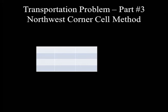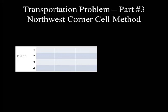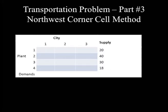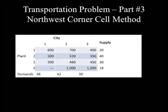The sources are labeled at the left margin as plant one, plant two, plant three, and the external network labeled as plant four. Supplies are written at the right margin of each row: 20, 40, 30, and 18 million kWh respectively. Destinations — city one, city two, and city three — are at the top, with demands of 36, 42 and 30 million kWh at the bottom. Unit transportation costs are filled in each cell. Since the external network is not linked to city one, no cost or flow is assigned to that cell. This completes the transportation table.